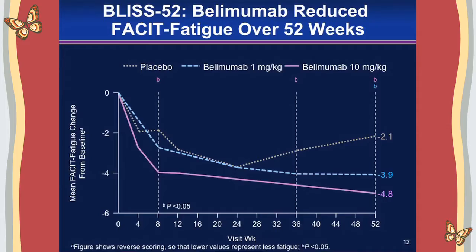An important patient-reported outcome is fatigue. The FACIT Fatigue scale is a validated measure, and the high dose of Belimumab produced significant reductions in fatigue as early as eight weeks, sustained out to one year, and significantly greater than standard of care at several time points.